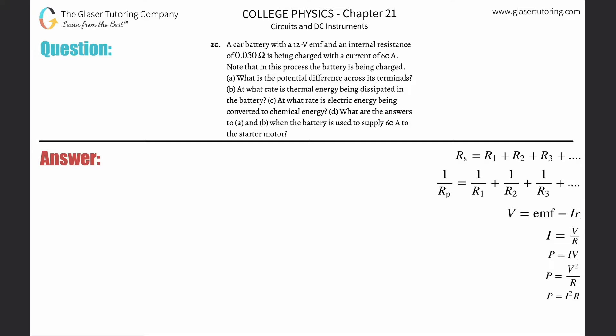Number 20, a car battery with a 12 volt EMF has an internal resistance of 0.05 ohms is being charged with a current of 60 amps. Letter A, what is the potential difference across its terminals? Or in other words, the terminal voltage.